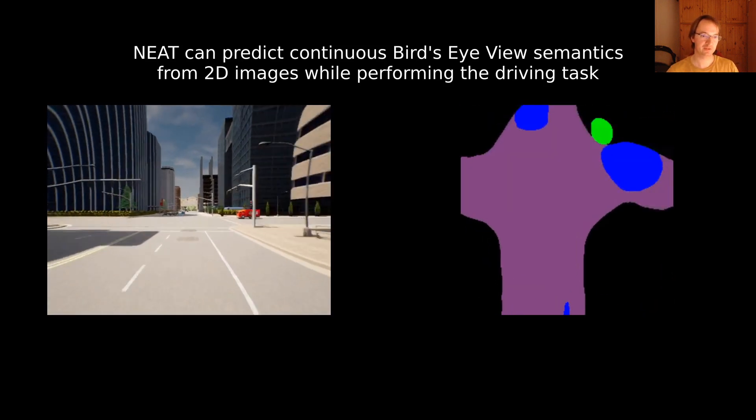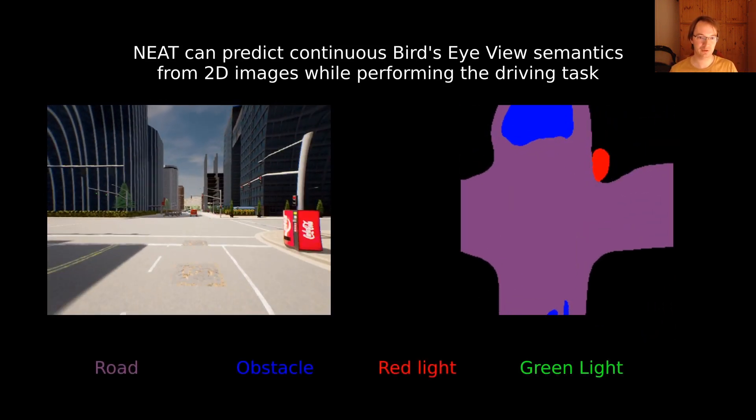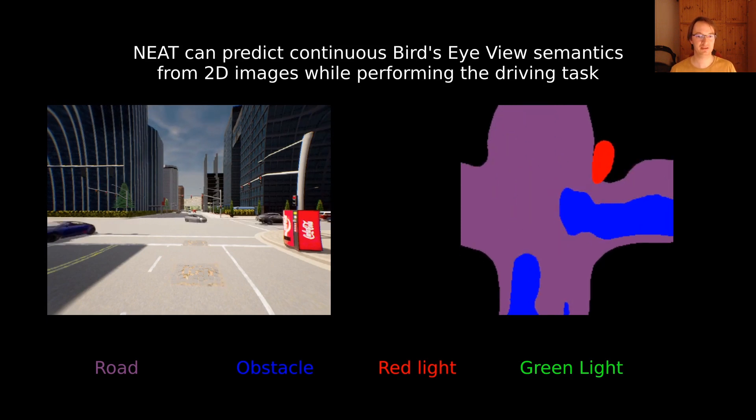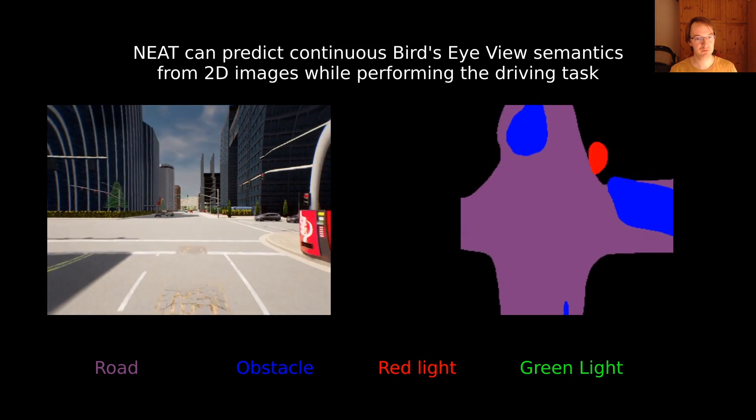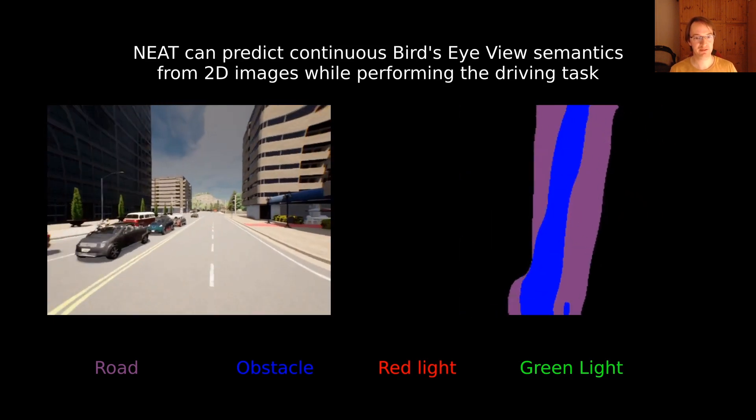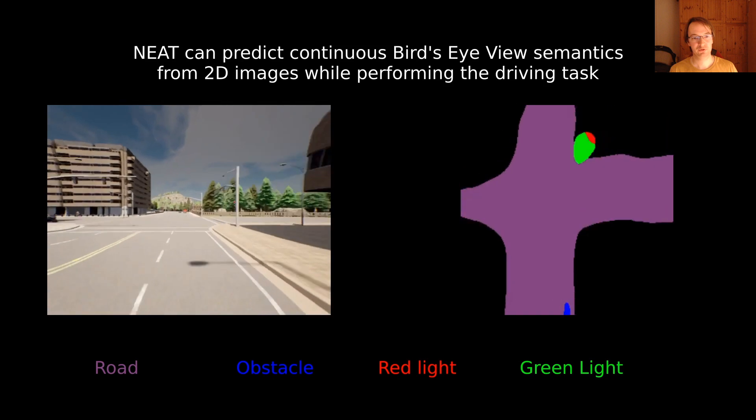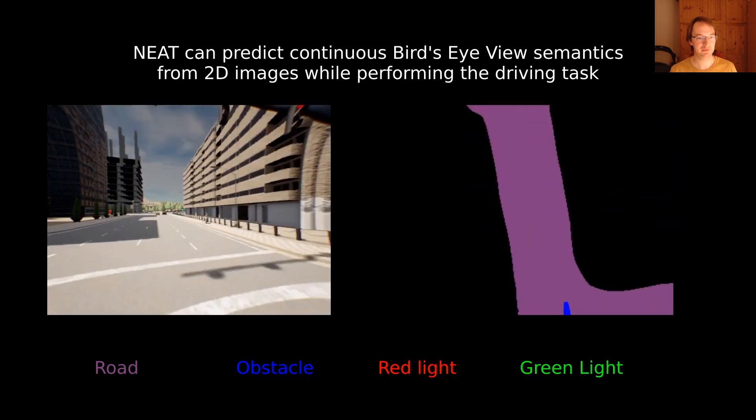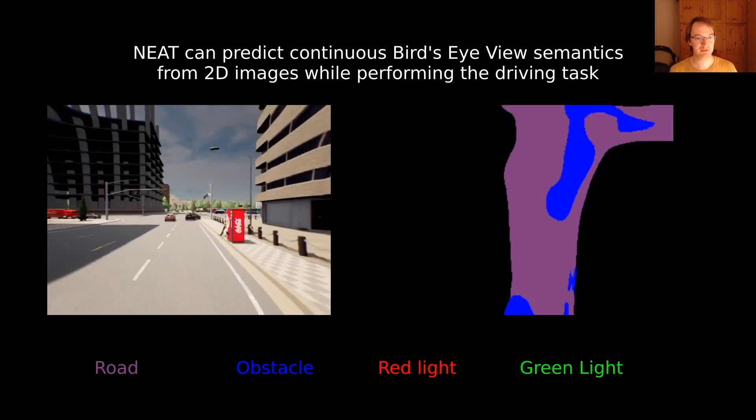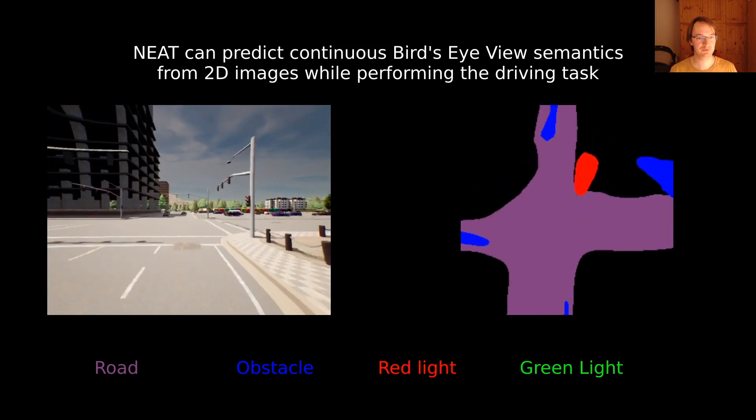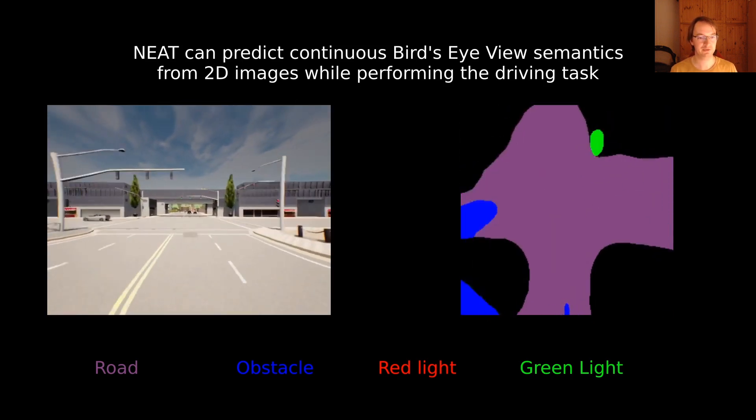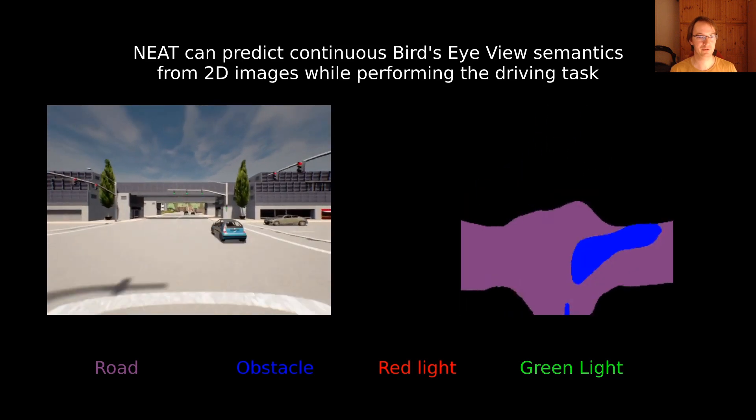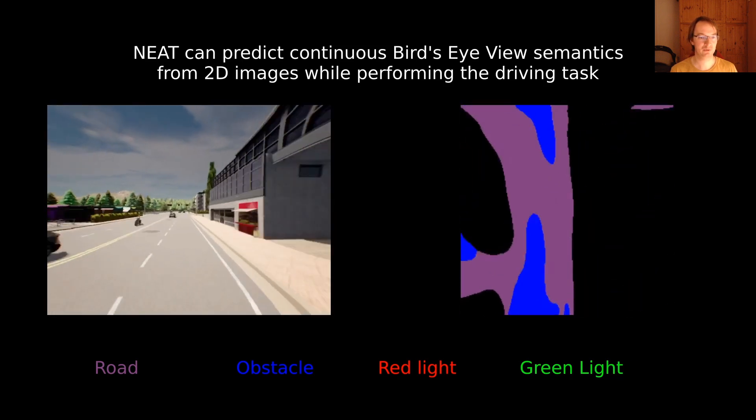So what you see here on the left is the driving policy that we have trained in action. The only input to that policy is multiple images, and the policy learns to adhere to traffic rules and stop for pedestrians and vehicles and make correct turns and drive to the goal location.